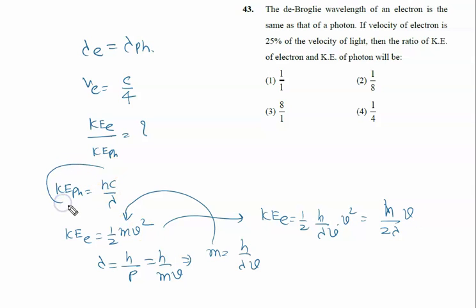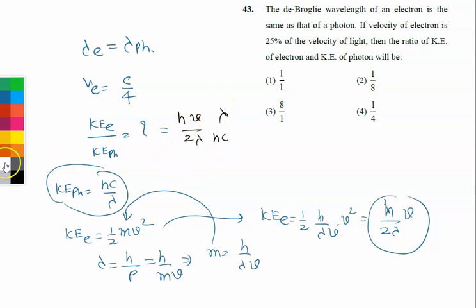So we have to calculate the ratio of the kinetic energy of electron and kinetic energy of photon. The kinetic energy of electron will be written as hv upon 2 lambda, and kinetic energy of photon is hc upon lambda. We will cancel that h and lambda. And v is given to us, that is c by 4. So it is c by 4, so c by 8.